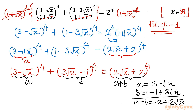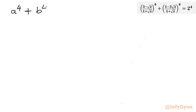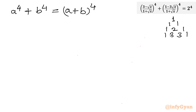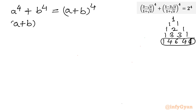Now I will use Pascal's triangle expansion for power 4. Pascal's triangle: 1 1 for power 1; 1 2 1 for power 2; 1 3 3 1 for power 3; and for power 4: 1 4 6 4 1. So here we have our coefficients for the expansion. The equation becomes: a to the power 4 plus b to the power 4 equals (a plus b) whole power 4.